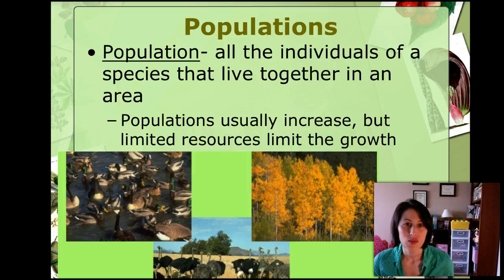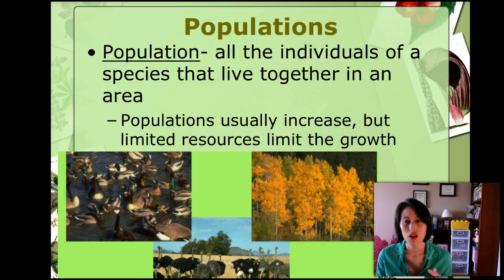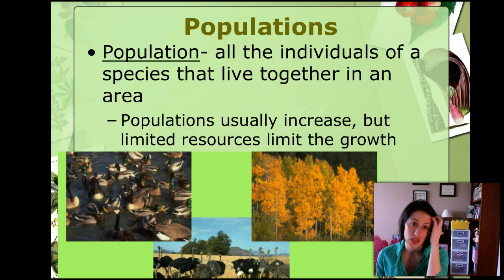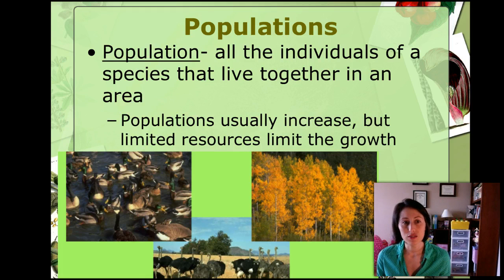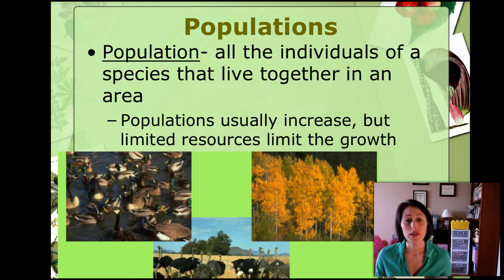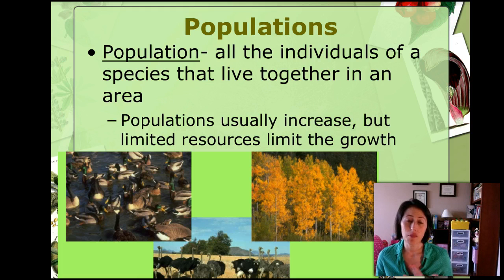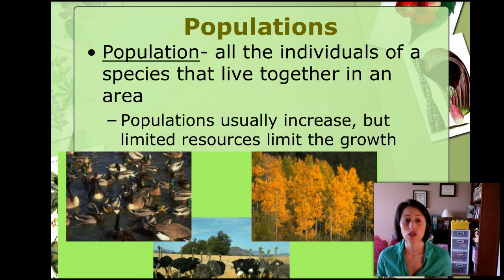We are continuing our discussion about populations and how different populations affect each other and affect the ecosystem. We're going to talk about how populations grow and change. As a review, a population is all of the individuals of a species that live together within an area. Populations usually increase, but they are affected by the resources in that environment, so limited resources are going to limit the growth of a population.